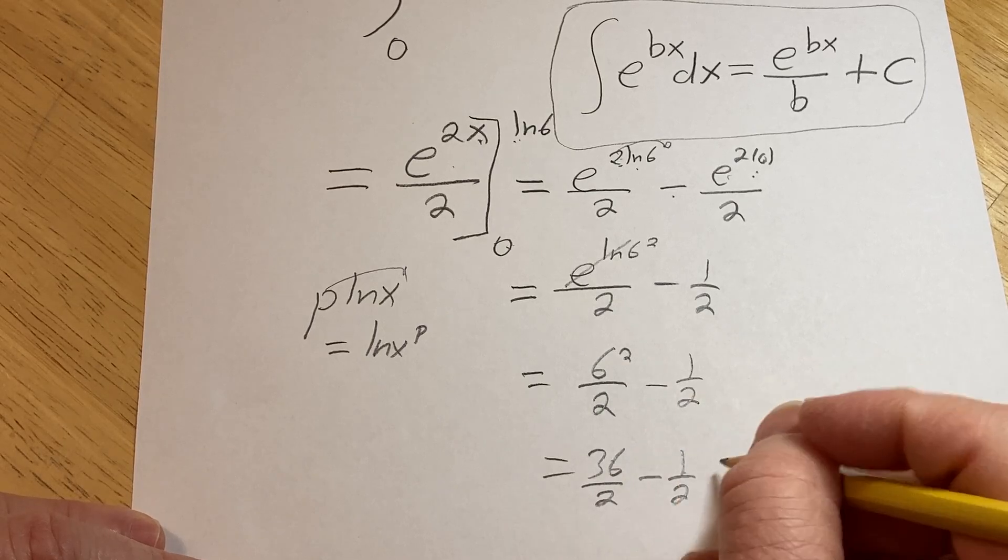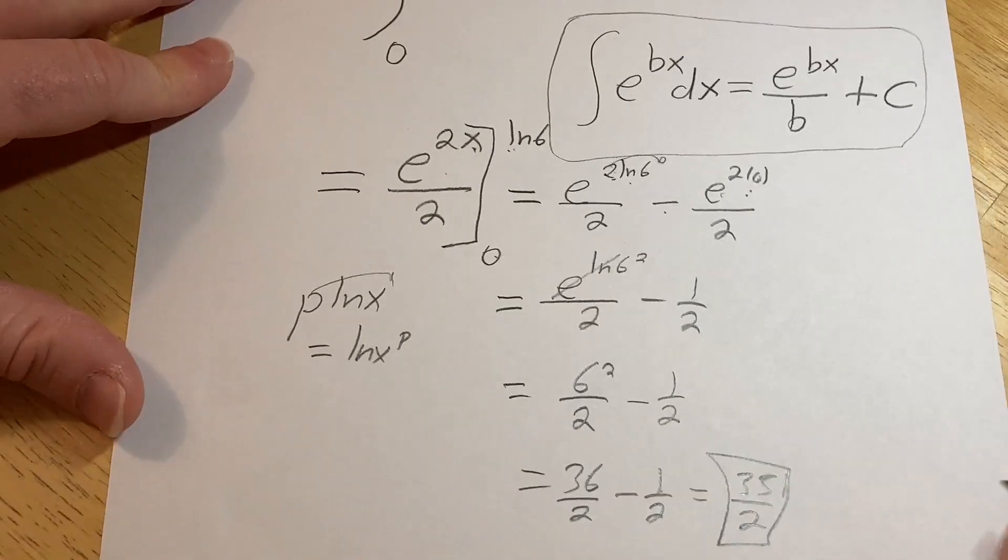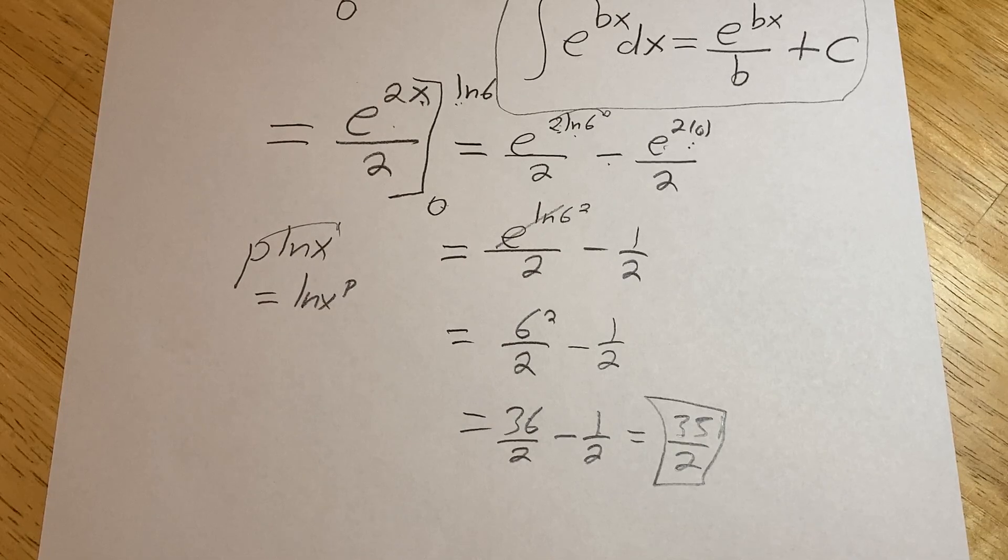36 minus 1 is simply 35 over 2. And that is the numerical value of this definite integral. Not a difficult problem, and hopefully you've learned something good. Good luck.